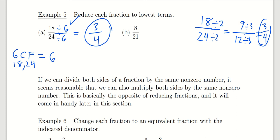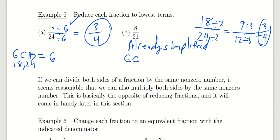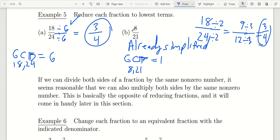If we look at example B, this fraction is already simplified, so there's really nothing to do. The GCF of 8 and 21 is just 1 — there's no number larger than 1 that evenly divides both 8 and 21. So there's nothing we can do to reduce it; it's already in simplest terms.